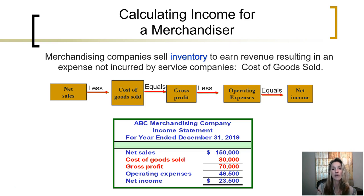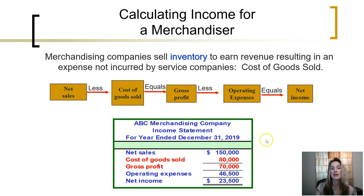In order to calculate net income, we also need to subtract all of the other operating expenses that the company incurred in order to earn those revenues. So all those other expenses we've been working with, such as salaries expense, utilities expense, rent expense, supplies expense — those are all subtracted separately. Then we end up calculating net income.